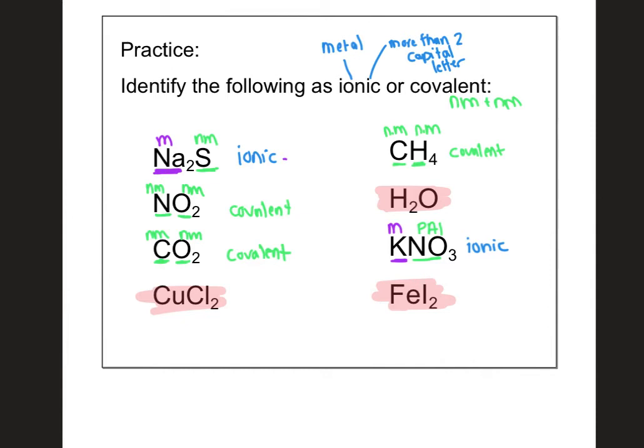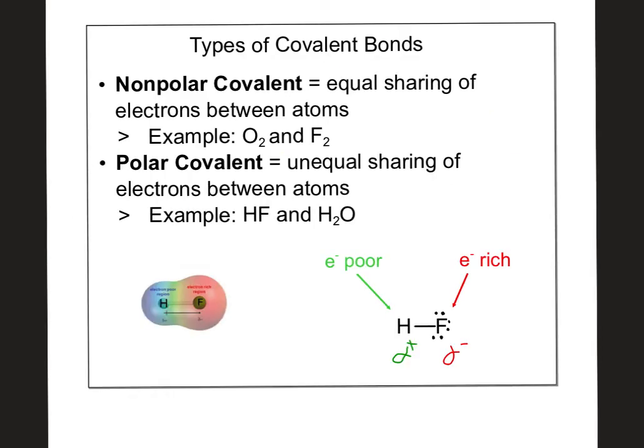And I'm going to put the answers up in five, four, three, two, one. All right. So we have a metal copper with a nonmetal chlorine making it ionic. Don't forget, hydrogen's a nonmetal. Oxygen's a nonmetal. So that's covalent. And then we have iron, which is a metal, with iodine, which is a nonmetal. So this one is ionic.